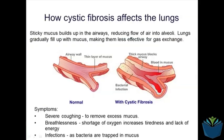The way cystic fibrosis affects the lungs is through the buildup of thick, sticky mucus. This is associated with extreme coughing, breathlessness, and a shortage of oxygen being delivered to cells, causing a lack of gas exchange. People with cystic fibrosis tire more quickly, and the thick sticky mucus also creates a perfect environment for bacteria to breed, so they experience more infections.